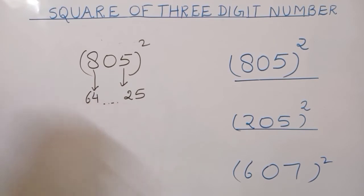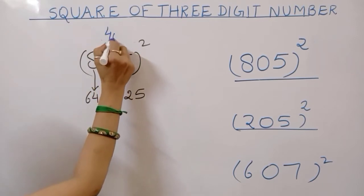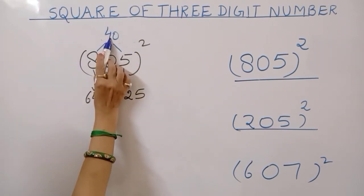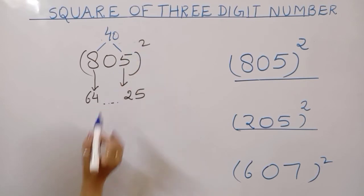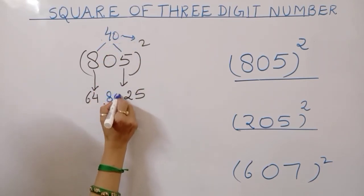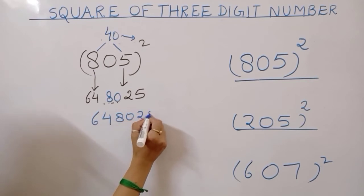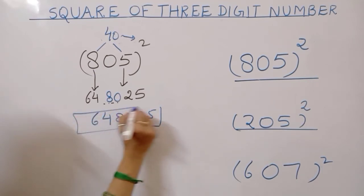Now check kareenge which number will be here. Second step, 8 multiply 5, 8 or 5 ko multiply, 40. And 40 multiply with this power, 40 multiply 2, 80. The middle number is 80. The final answer, 64, 80, 25. Square of 805.